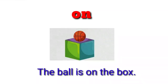On. The ball is on the box. Here, the object is on a flat, open surface — an open space on top. We use the preposition 'on' for this. So, if it's an enclosed surface, use 'in'; if it's an open surface, use 'on'.